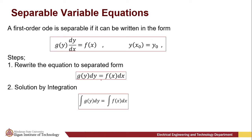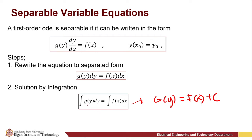Then, to find a solution, we just have to integrate both sides. After integration, our solution becomes capital G(y) equals capital F(x) plus the constant c. Capital G(y) is the integral of g(y) dy, and capital F(x) is the integral of f(x) dx. We combine the arbitrary constant c since we have the integration process.